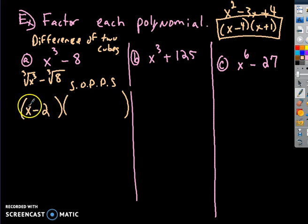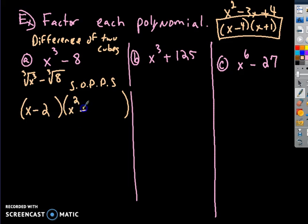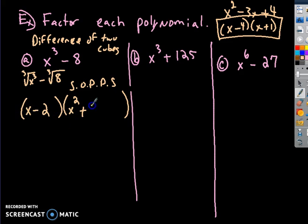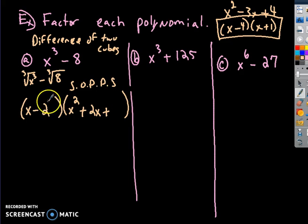For the trinomial, we use Square, Opposite, Product, Plus, Square. Take the first number from the binomial and square it: X squared. Then take the opposite sign — it said subtraction, so we make it plus. Then the product of the two numbers: 2 times X is 2X. There's always a plus sign before the last term. Finally, square the last number: 2 squared is 4.